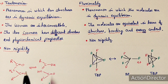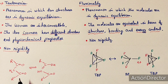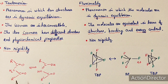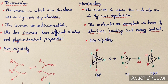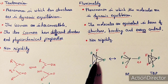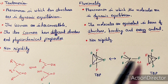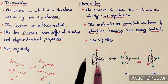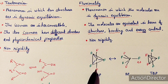The difference with tautomerism: because the keto and enol compounds are entirely different, they have different physical and chemical properties, so it is not a fluxional molecule. In contrast, if all the fluorine atoms are represented by the same color, you find that the two PF5 structures are equivalent. This kind of phenomenon is known as fluxionality.